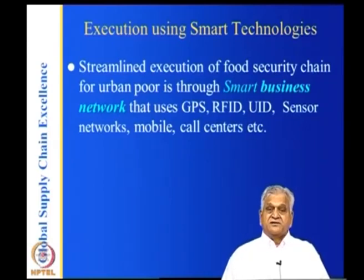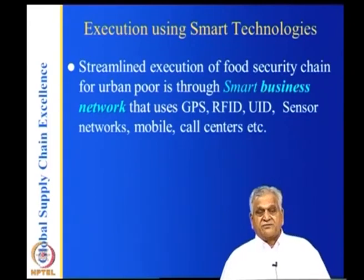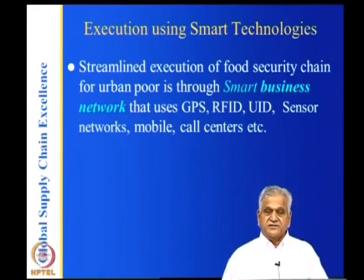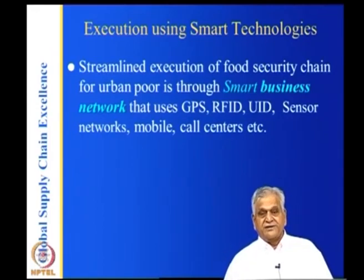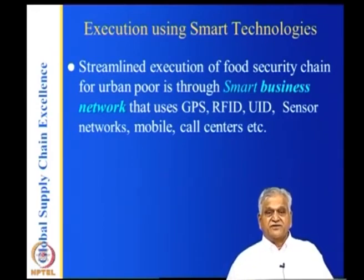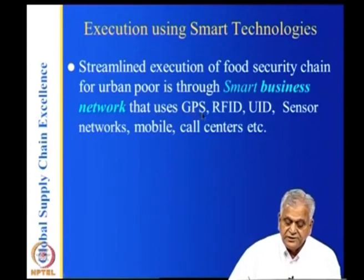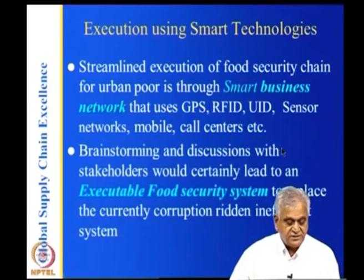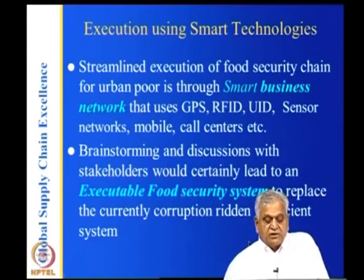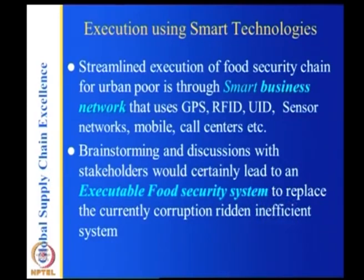Execution uses smart technologies in a smart business network. The business network consists of 500,000 people — 150,000 hawkers and other employees — serving 10 million people eating the food. The streamlined execution of the food security chain for the urban poor uses GPS, RFID, UID, sensor networks, and mobile call centers. Brainstorming and discussions with stakeholders would certainly lead to an executable food security system to replace the current corrupt and inefficient system.